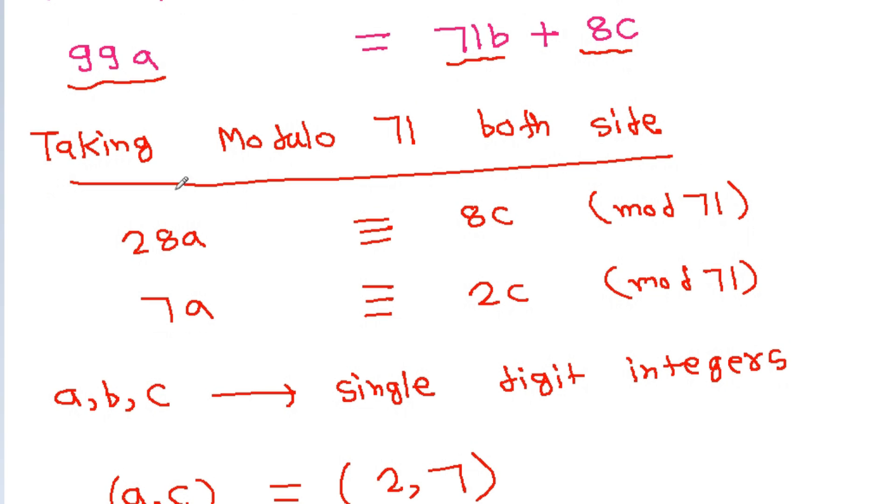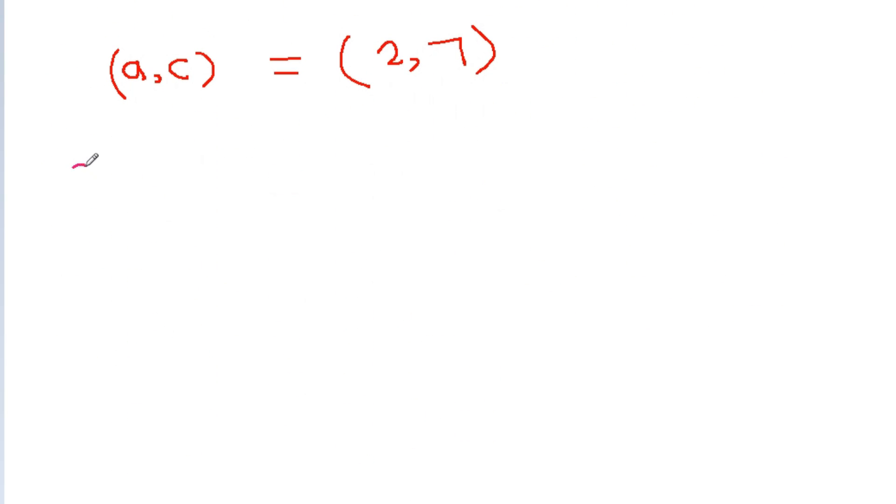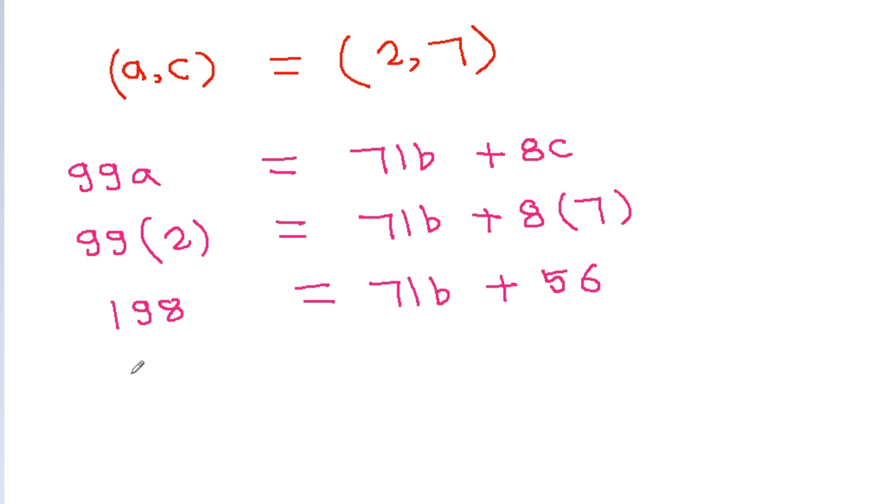We have 99a equals 71b plus 8c. So 99 times a, which is 2, equals 71b plus 8 times c, which is 7. That's 198 equals 71b plus 56.